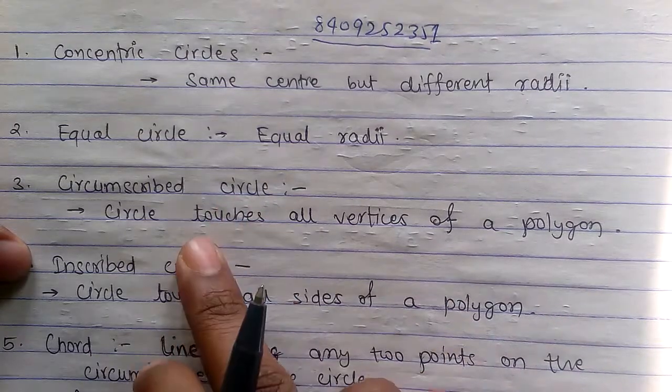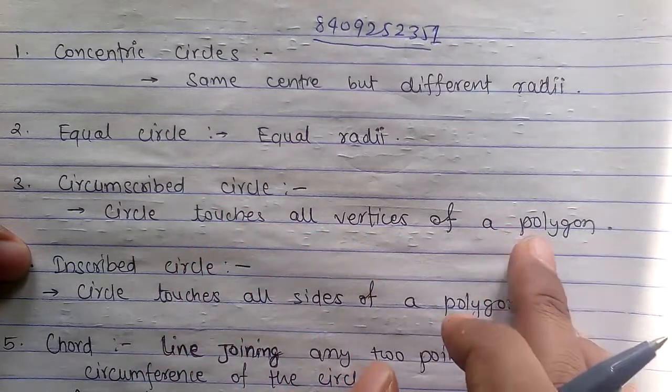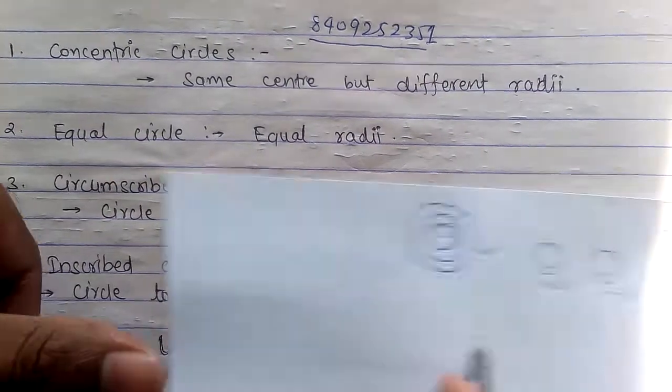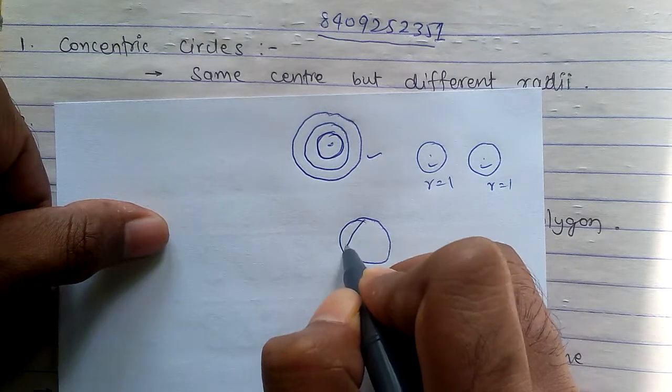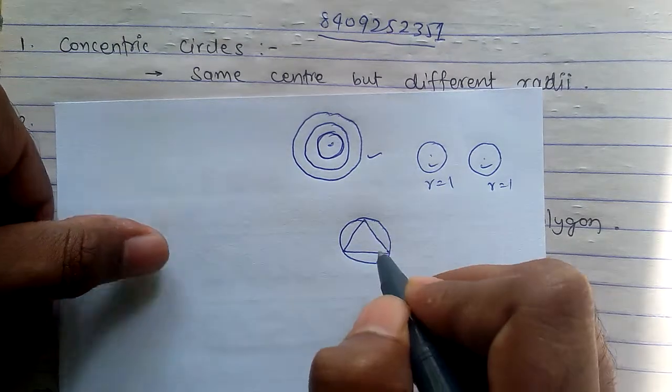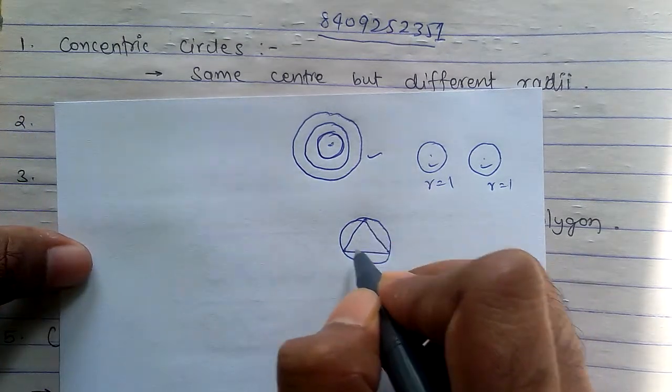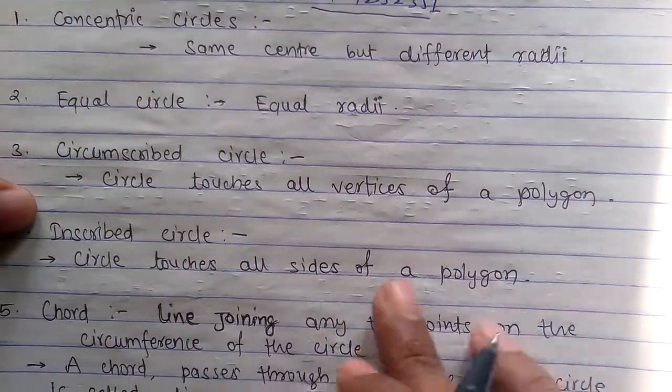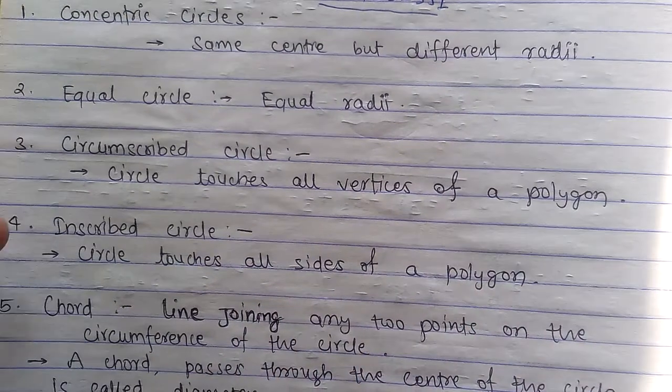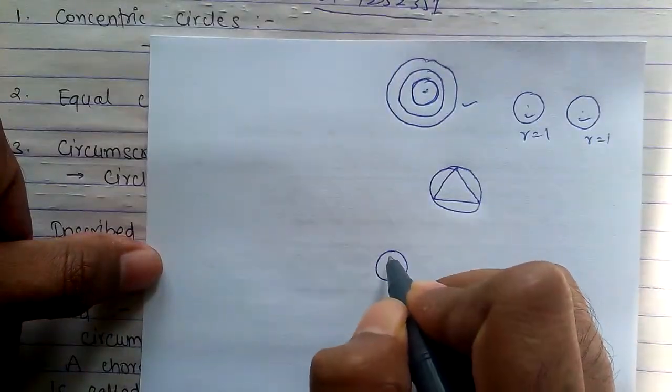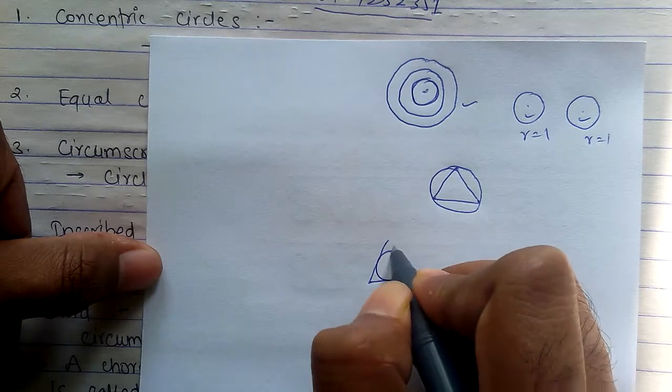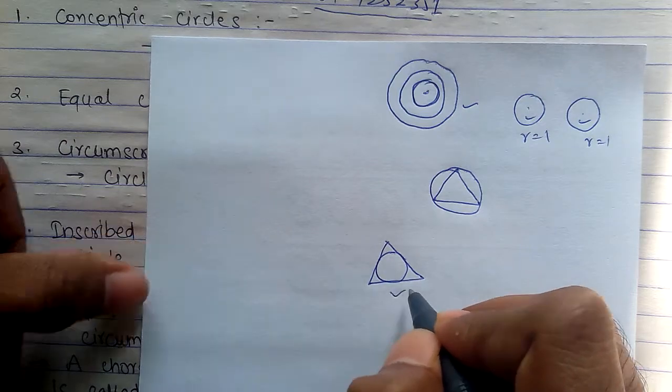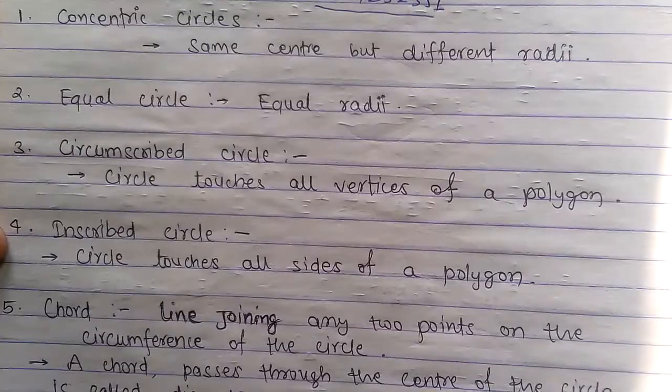Circumscribed circle: circle touches all vertices of a polygon. All vertices should be touched. For example, you have a circle and inside there is a polygon - all vertices should be touched. This is circumscribed circle. Inscribed circle: circle touches all sides of polygon.